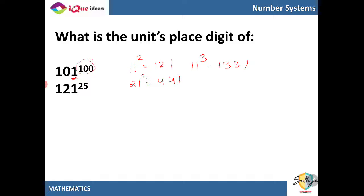So 121 raised to 25 will also have the units place digit as 1. Now for 665 raised to 32, take 5 square 25, 5 cube is 125, 25 square is 625, 15 square is 225. So any power of a number ending with 5 ends in 5. So here the units place digit is 5.